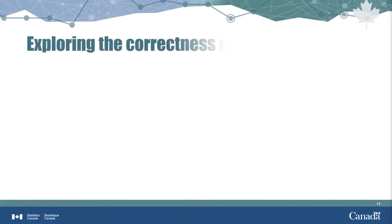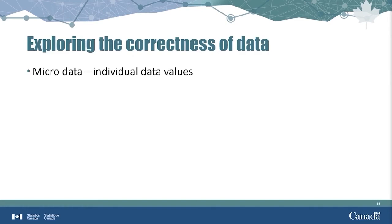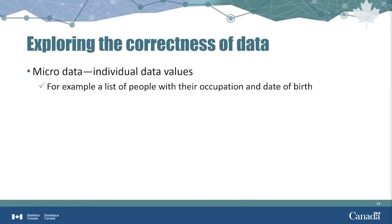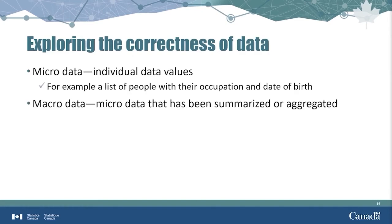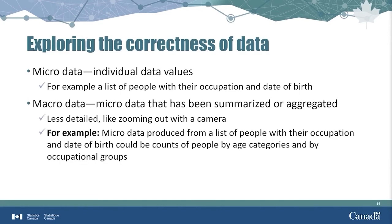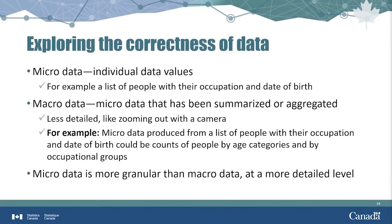We said earlier that accurate data is both valid and correct. We looked at the VIMO analysis as a way to explore the validity of data. Now let's focus on the correctness of data. First, we need to differentiate between looking at individual data values — or microdata — and looking at those values summarized up to a higher level, or macrodata. Microdata is more granular than macrodata, at a more detailed level.